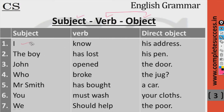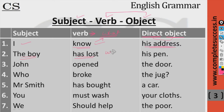The sentence structure is: subject, then verb, then object — and the object is part of the predicate. First sentence: 'I know his address.' To identify the direct object, we ask the verb the question 'what?' — 'I know what?' — the answer is 'his address.' Second example: 'The boy has lost' — we ask 'what?' — and the answer is 'his pen.'